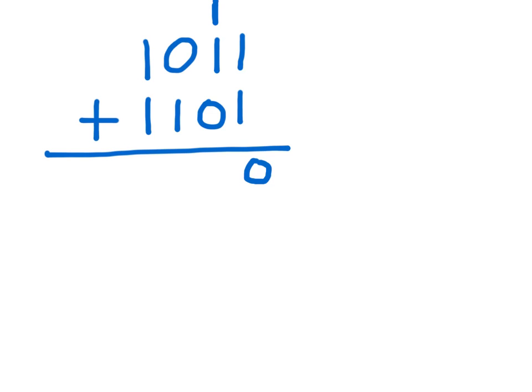And then you'll repeat the process going over to the left. So in the next column, the 2s column, we have two 1s. That means 1 is going to carry over and a 0 is going to drop down. And then now in the 4s column, we have two 1s. That means it's going to carry over and the 0 is going to drop down.